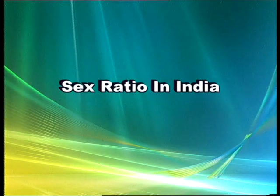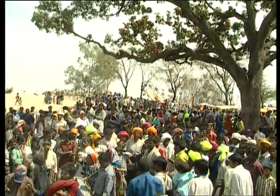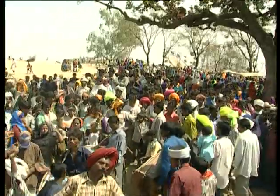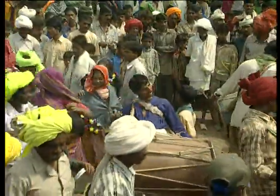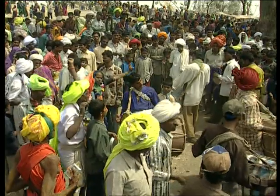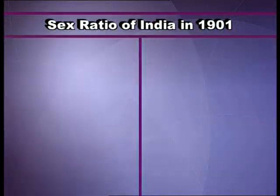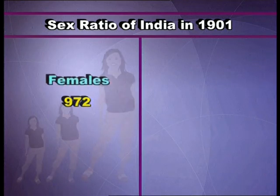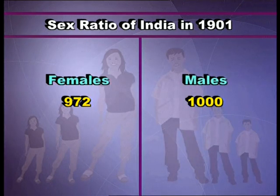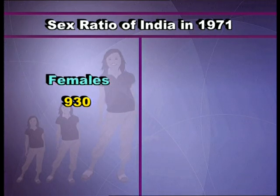In India, for the past several decades, it has been noted that males are more numerous in comparison to females. In 1901, the sex ratio of India was 972, while in 1971 it came down to 930.